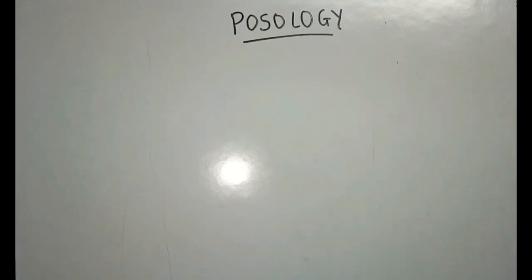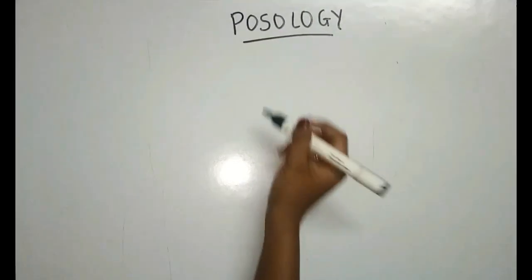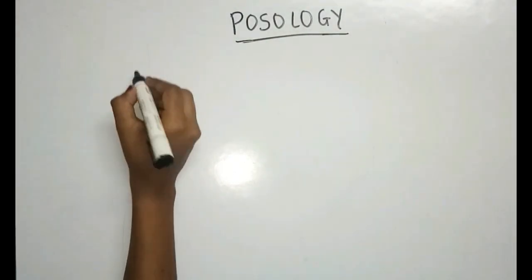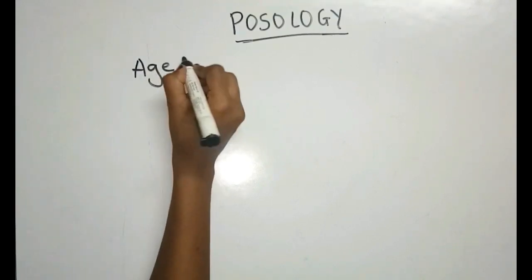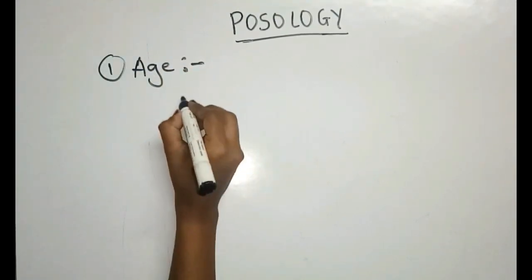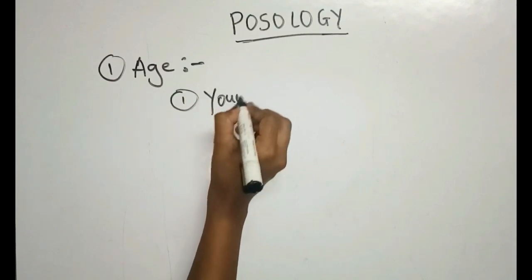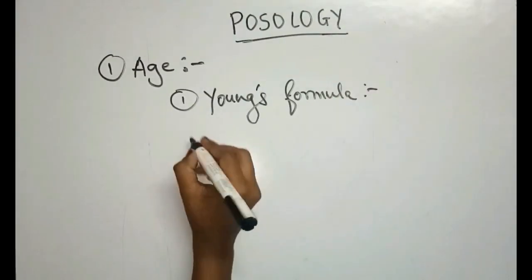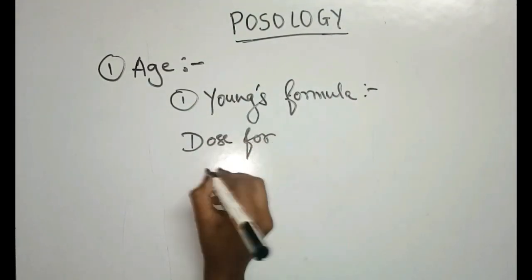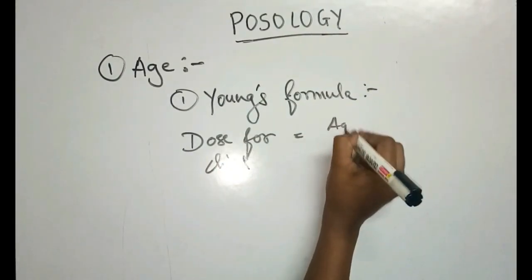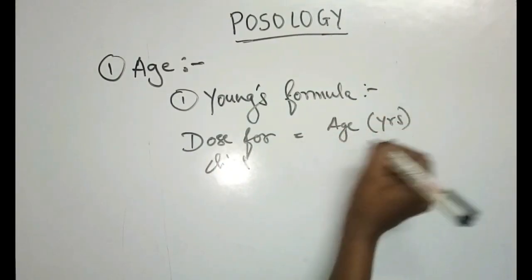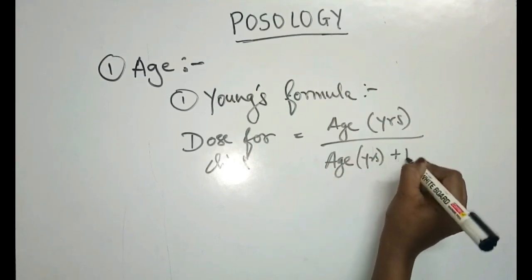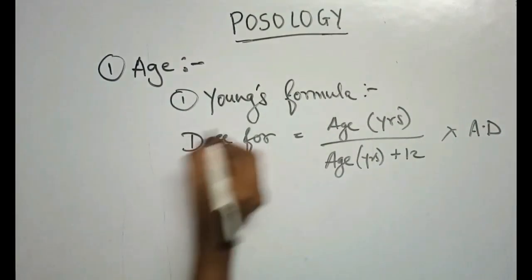Hello friends, today we will see the dose calculation. The term for calculation of the dose is posology. The first method is to calculate the dose using age. The first formula is Young's formula, and the formula for dose calculation for a child is: age in years divided by (age in years plus 12), multiplied by the adult dose.